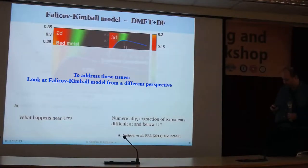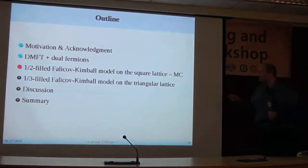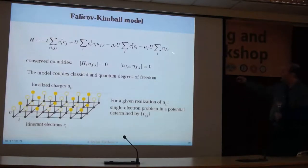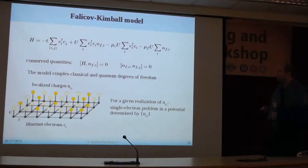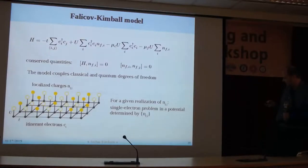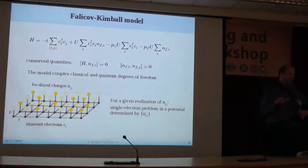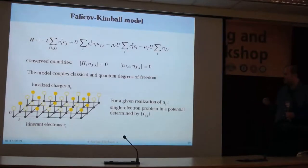To address this issue, I would like to look at the Falikov-Kimbell model from a slightly different perspective — this brings me to the third point of the outline: the Falikov-Kimbell model on the square lattice treated with Monte Carlo. If you look at the Hamiltonian long enough, you will notice that the localized electrons define conserved quantities because they commute with the Hamiltonian. You have a macroscopic number of such conserved quantities, and they are classical. So this model couples classical and quantum degrees of freedom. Yet, it's not a simple or integrable model. In 1D, this model is not integrable, because when you go to the Hubbard model and create a mass imbalance, integrability gets lost.